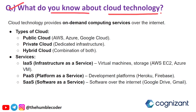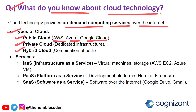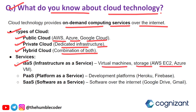The next question is: what do you know about cloud technology? This is a very generic question anyone can expect. Cloud technology provides on-demand computing services over the internet. There are different types: public cloud (AWS, Azure, Google Cloud), private cloud (dedicated infrastructure), and hybrid cloud (combination of both). Cloud services include IaaS (Infrastructure as a Service) — e.g., virtual machines like EC2 or Azure VM; PaaS (Platform as a Service) — e.g., Heroku, Firebase; and SaaS (Software as a Service) — software over the internet like Google Drive and Gmail.